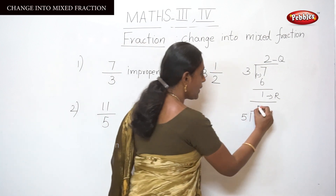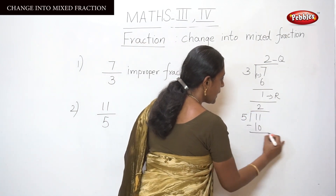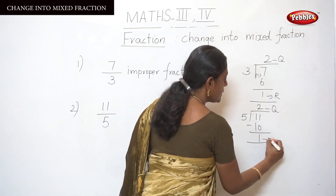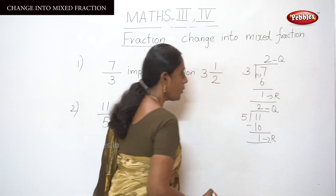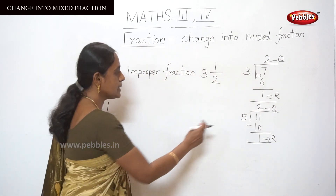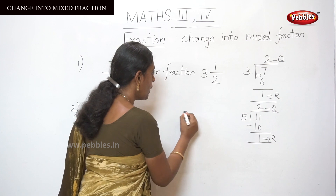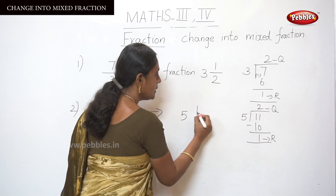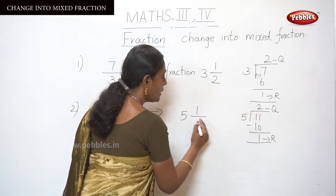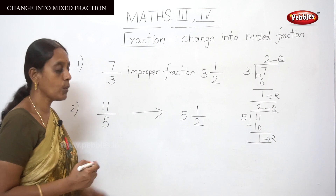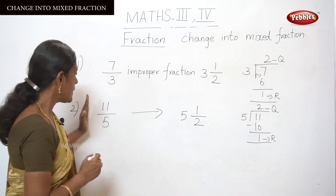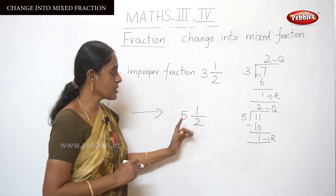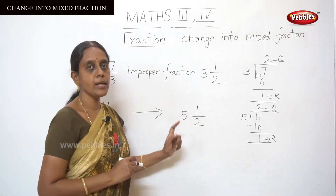Now, 2 fives are 10. Subtract to get a remainder of 1. This is the quotient and this is the remainder. Write the divisor as the whole number, and the remainder 1 over the divisor 5 gives 2 and 1 by 5. So 11 by 5 changed into mixed fraction is 2 and 1 by 5.